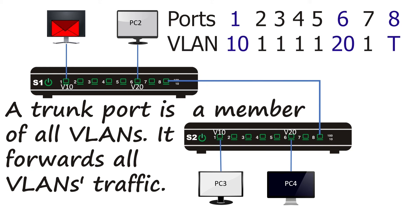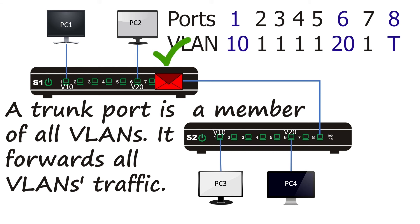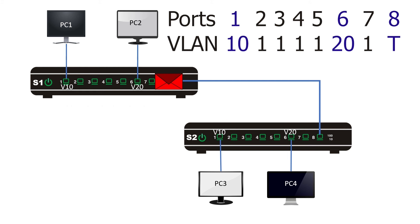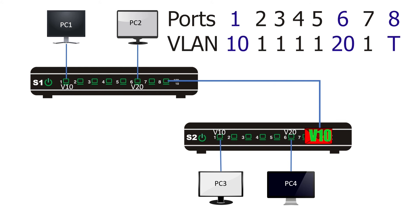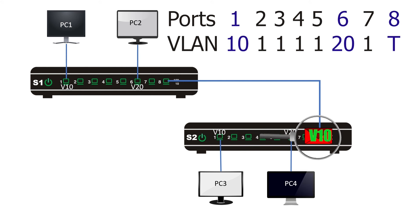PC1 generates a broadcast frame that reaches port 1 (VLAN 10). The switch decides to forward it from all ports with VLAN ID 10. Since a trunk port belongs to all VLANs, the frame is forwarded from it — but a trunk port does not forward in the original format. Before forwarding, it adds a VLAN header containing the VLAN ID (here, VLAN 10). The modified frame reaches switch 2's trunk port, which reads the VLAN header to learn the frame is intended for VLAN 10, then removes the VLAN header and forwards the frame from all ports with VLAN ID 10.